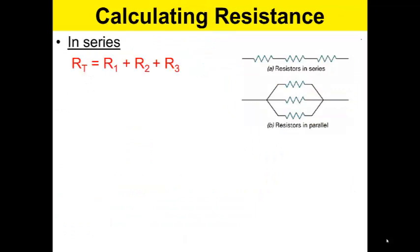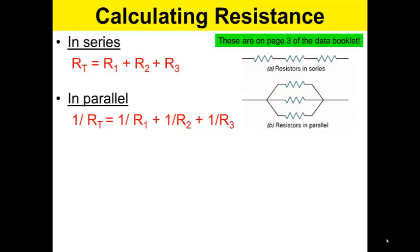Calculating resistance. In a series circuit, the total resistance is equal to the resistance in the first resistor, the second resistor, and the third resistor. In parallel, it's 1 over total resistance is equal to 1 over the resistance in each one of those things. These are found on page 3 of your data book. So in series, they are directly additive, and in parallel, they are expressed as a fraction of the total, because each one is a fraction of the total amount in a circuit.